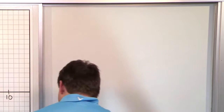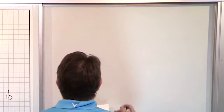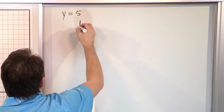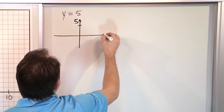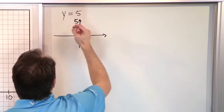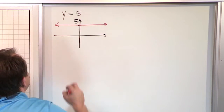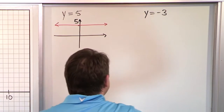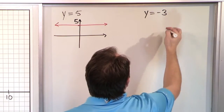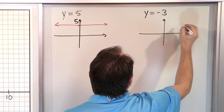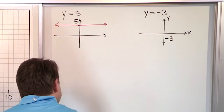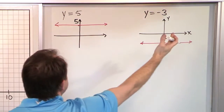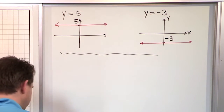Let's give a couple more examples. If I give you y equals 5, it's really 0x plus 5, but you don't need to go through all that. It's simply a horizontal line through the value 5 on the y-axis, with slope equal to zero. What if I have y equals negative 3? It doesn't matter what x is — y is always going to be negative 3. Down here at negative 3 on the y-axis, it's a horizontal flat line that crosses directly through there. All horizontal lines look exactly the same: y equals a number.